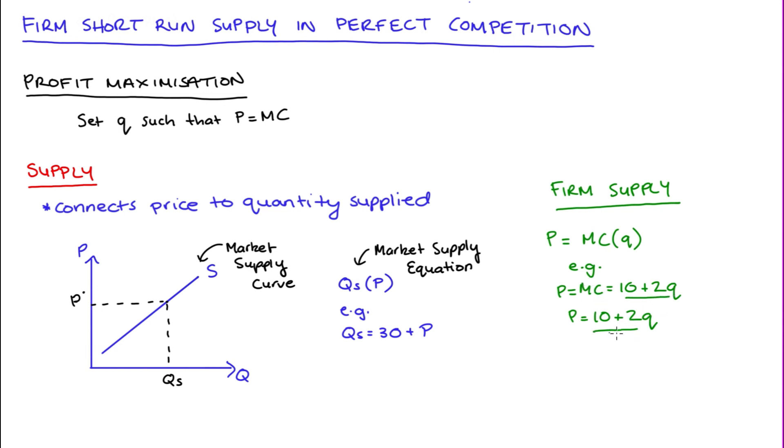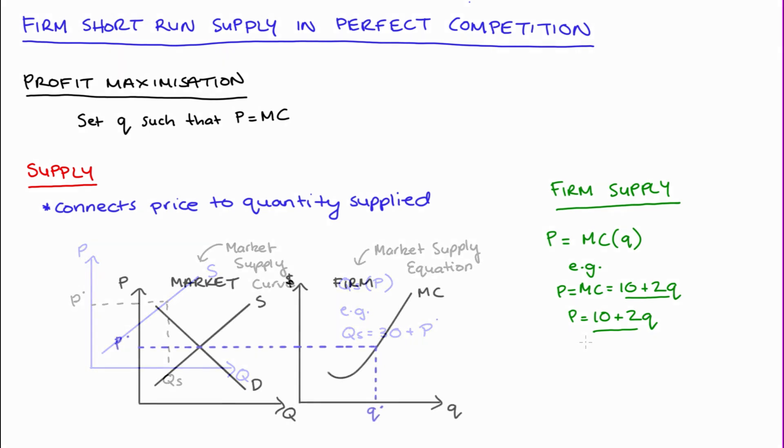Lastly, we can see all of this graphically. If we draw a marginal cost curve next to our market diagram, we can see firm profit maximization as follows.